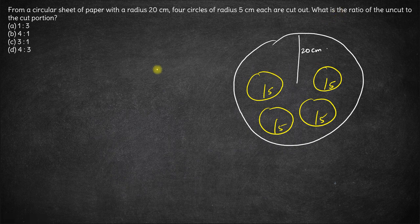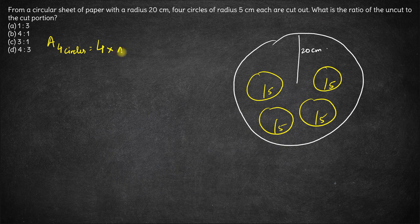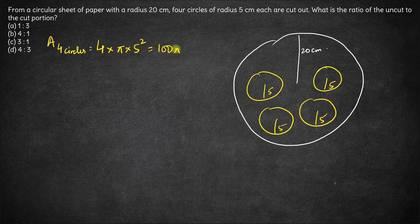For the cut portion, let us calculate the area of these four smaller circles. This will be 4 times the area of each circle. Area of each circle is π × r², which is 5². So 5² is 25, 25 × 4 is 100π. This is the area of the four circles.